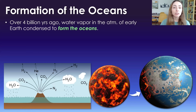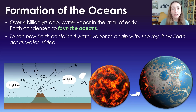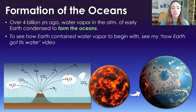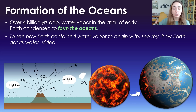Over four billion years ago, water vapor was pretty rich in the atmosphere due to outgassing, like I talked about in the atmospheric video. This water vapor eventually, as Earth cooled, condensed out of the atmosphere to form the early oceans. To learn more about how Earth's rocks and atmosphere contained water or was delivered water by impacts, I cover that in my How Earth Got Water video — I'll link that to the top right.